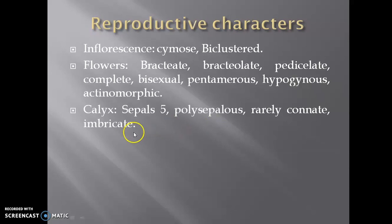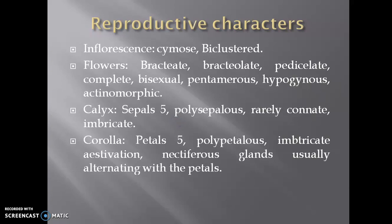The calyx has five sepals; they are free, making them polysepalous. Sometimes they are fused or connate at the base and show presence of imbricate aestivation. The corolla has five petals as the flower is pentamerous, and the corolla is polypetalous because the petals are also free. It shows presence of imbricate or twisted aestivation, and the corolla shows presence of alternating nectariferous glands.